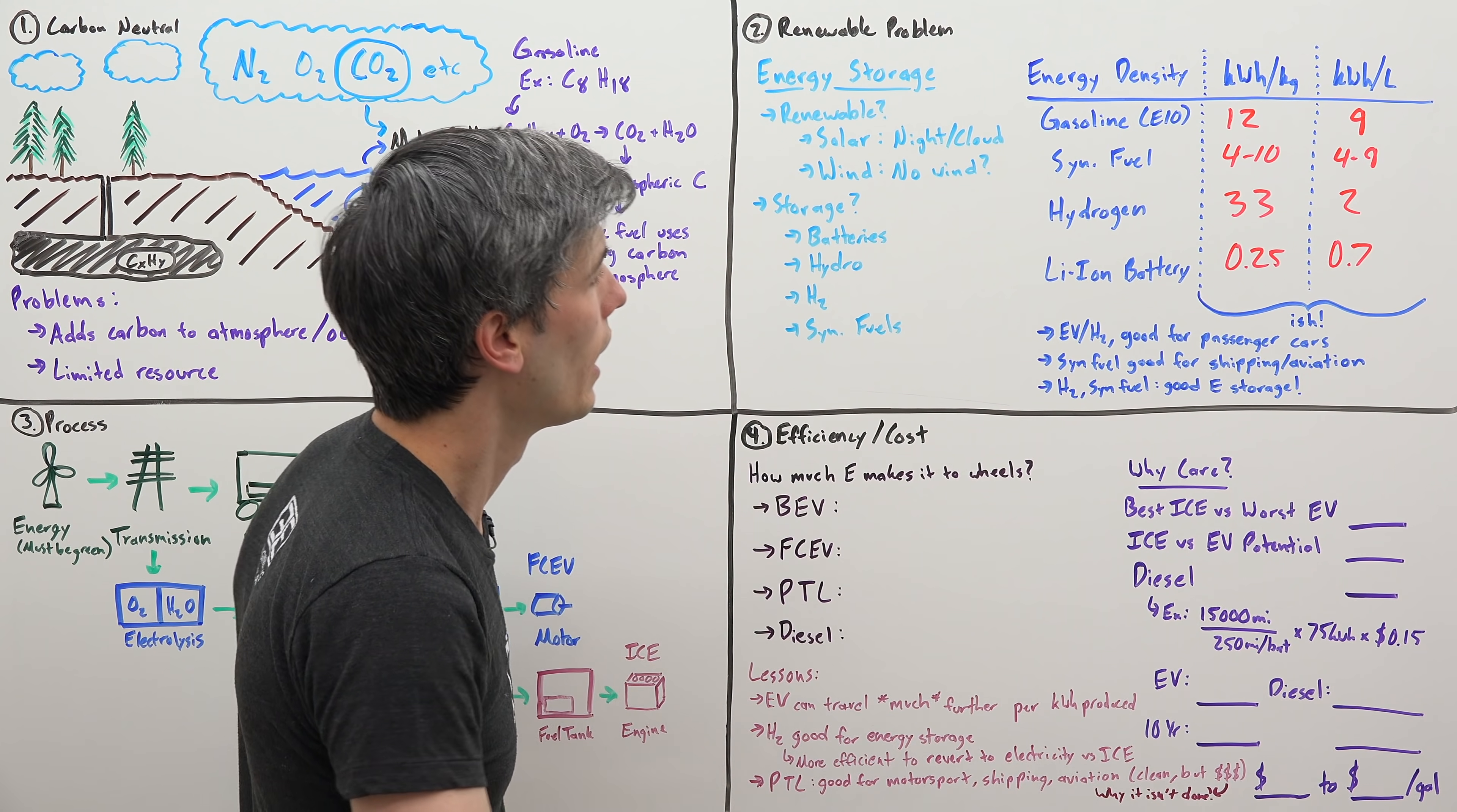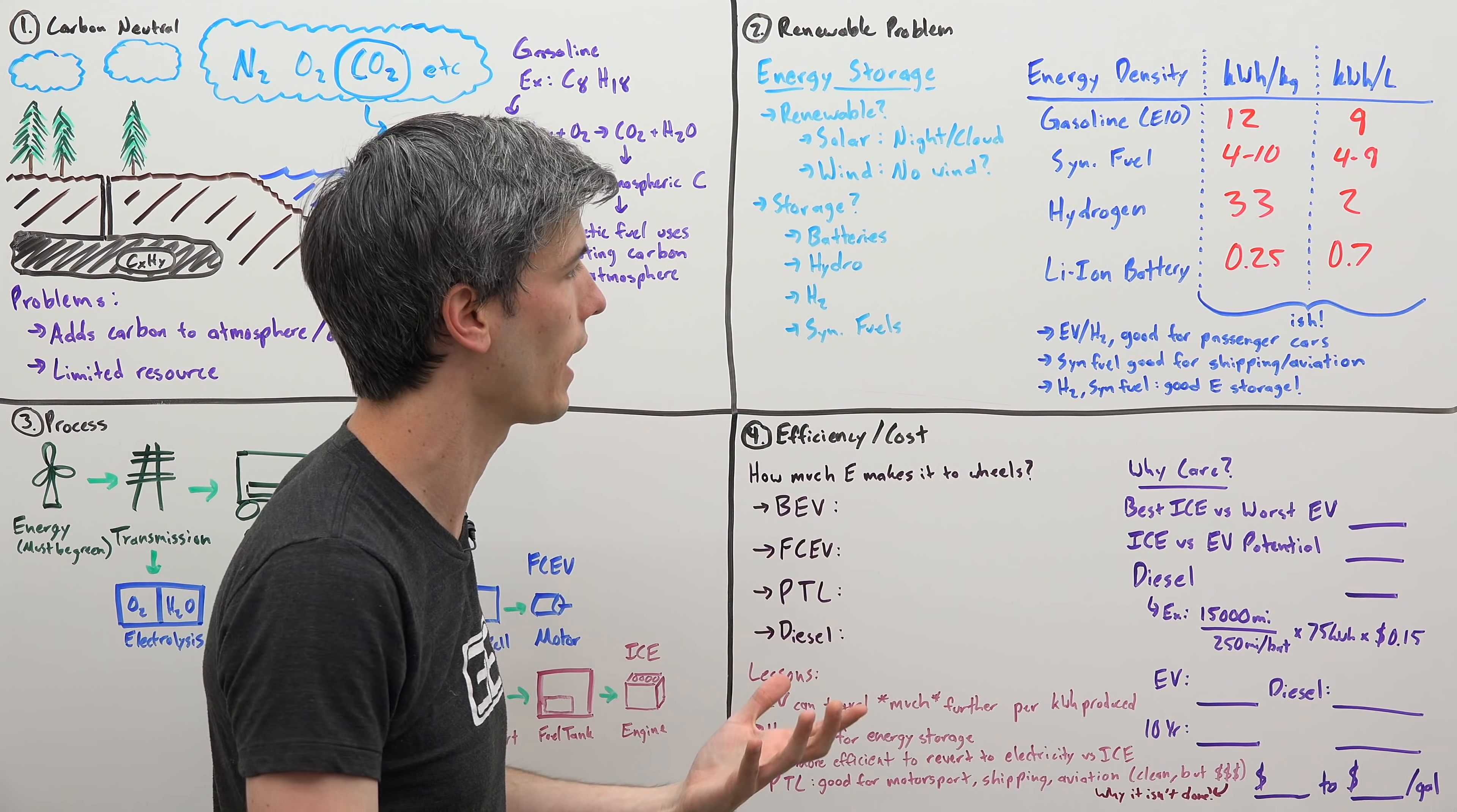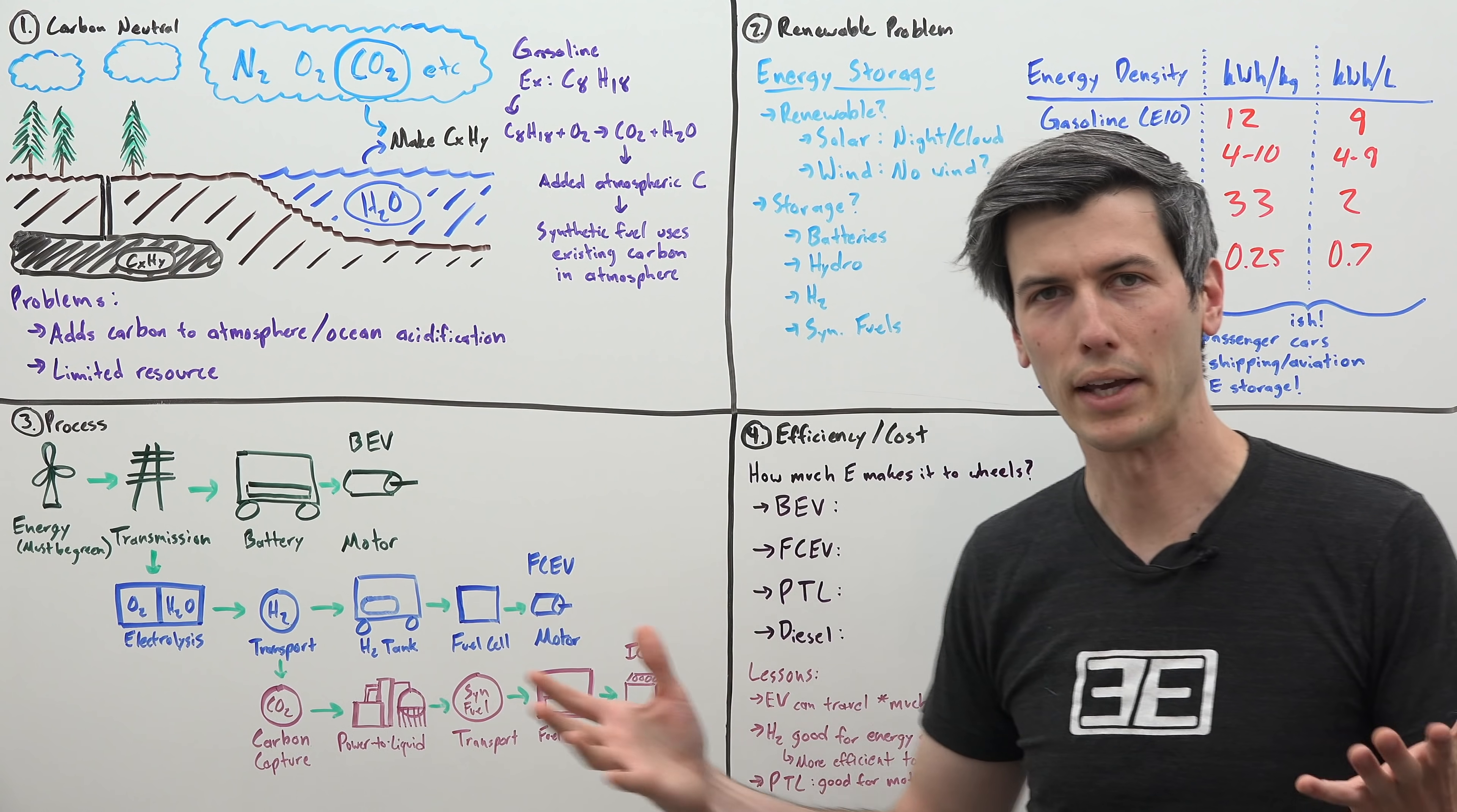For vehicles like passenger cars, hydrogen and lithium ion can make sense. You don't need all that much energy in order for these to go a good distance. Unfortunately, for things like shipping, massive boats, aviation, planes, they need a lot of fuel and a plane can't weigh all that much. So you're going to want to use things like gasoline or synthetic fuel. That's an application where it might make good sense to be carbon neutral and still have really good energy density.